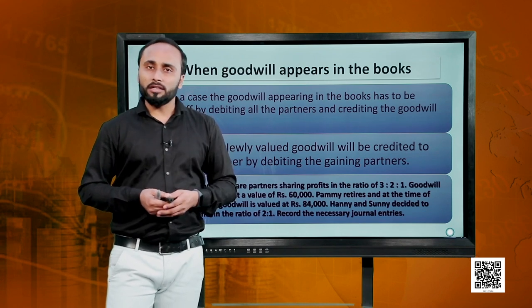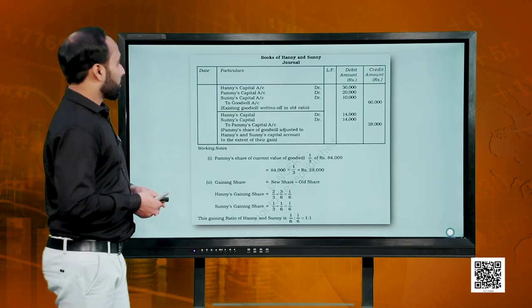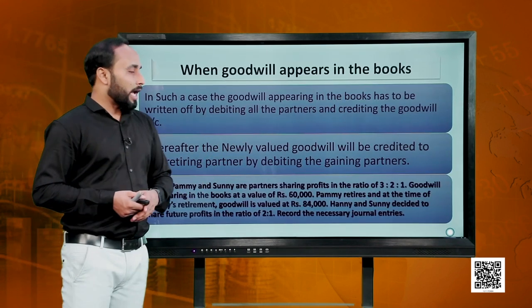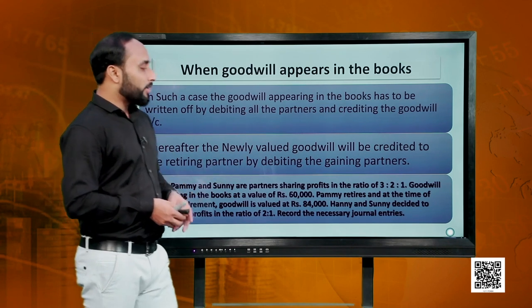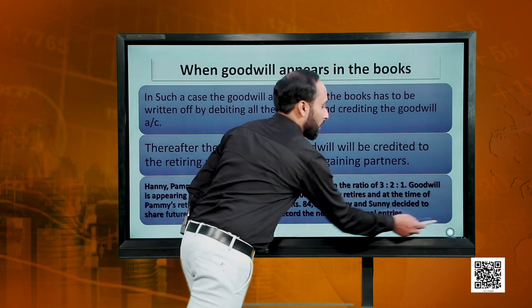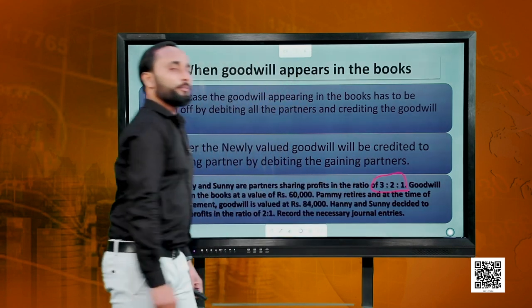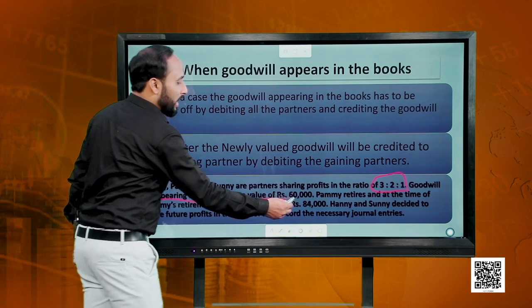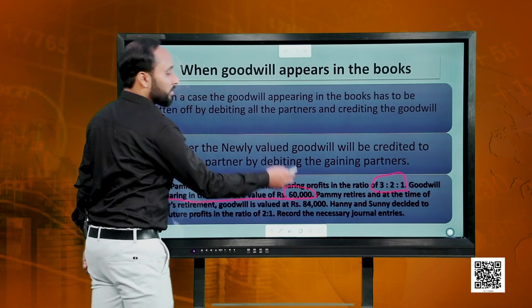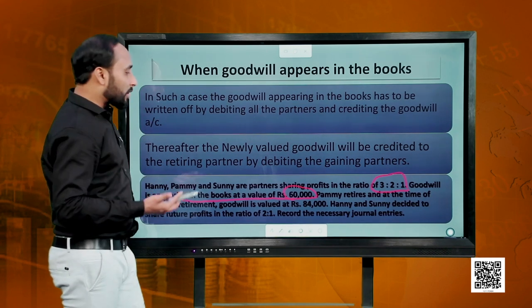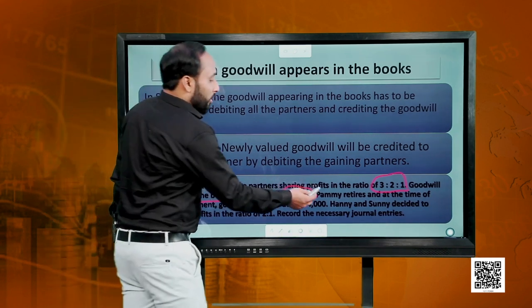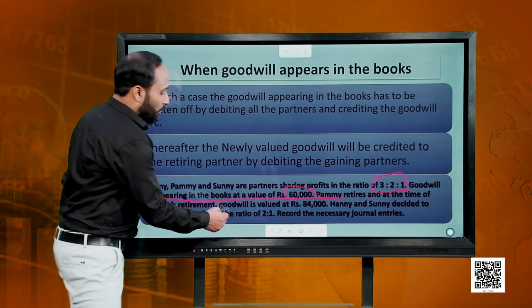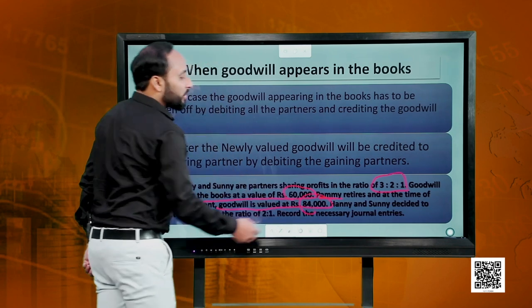Let us take a look at the related example. We have Henny, Pammy and Sunny as partners sharing profits in the ratio of 3:2:1. Goodwill appearing in the books is valued at 60,000 — this is the existing goodwill. Pammy retires and at the time of retirement, goodwill is valued at 84,000, which we can call the new goodwill.